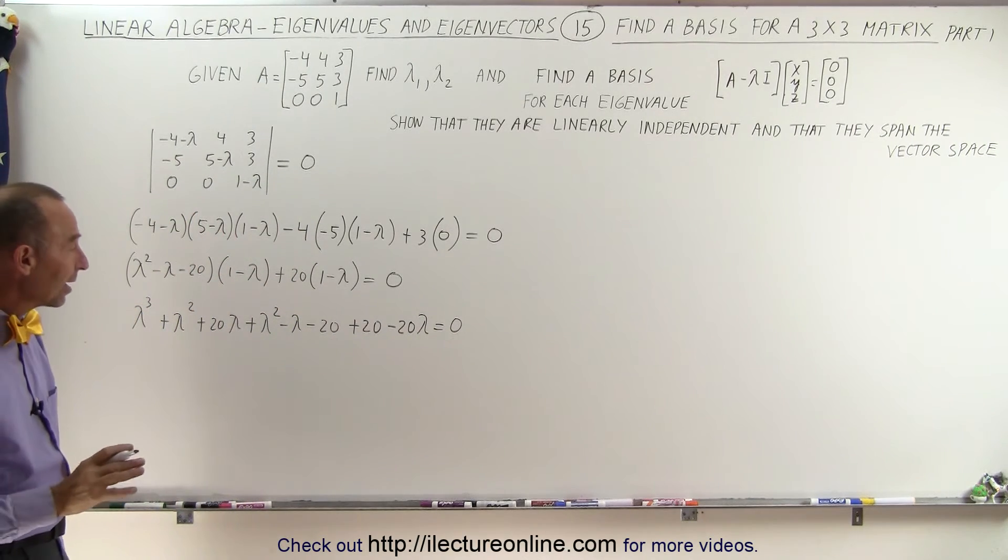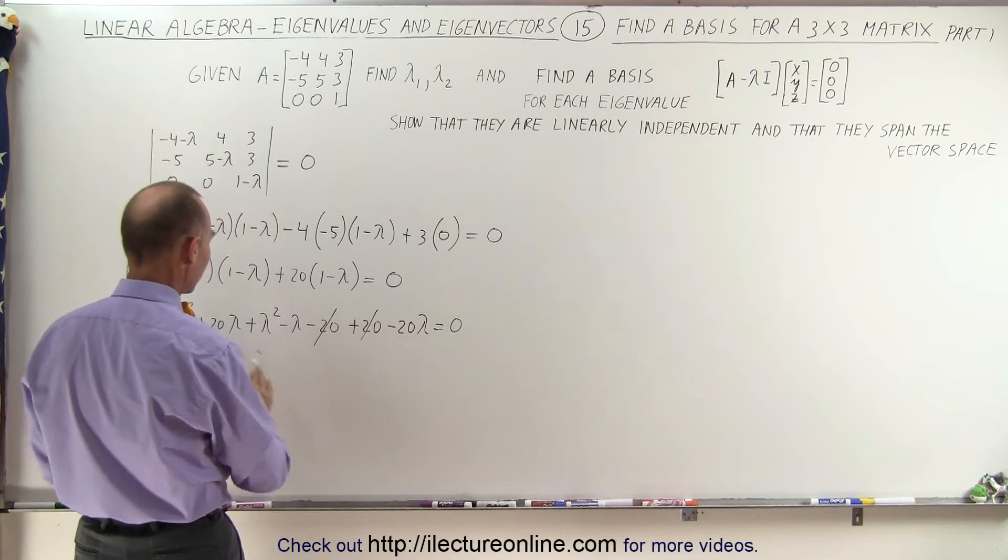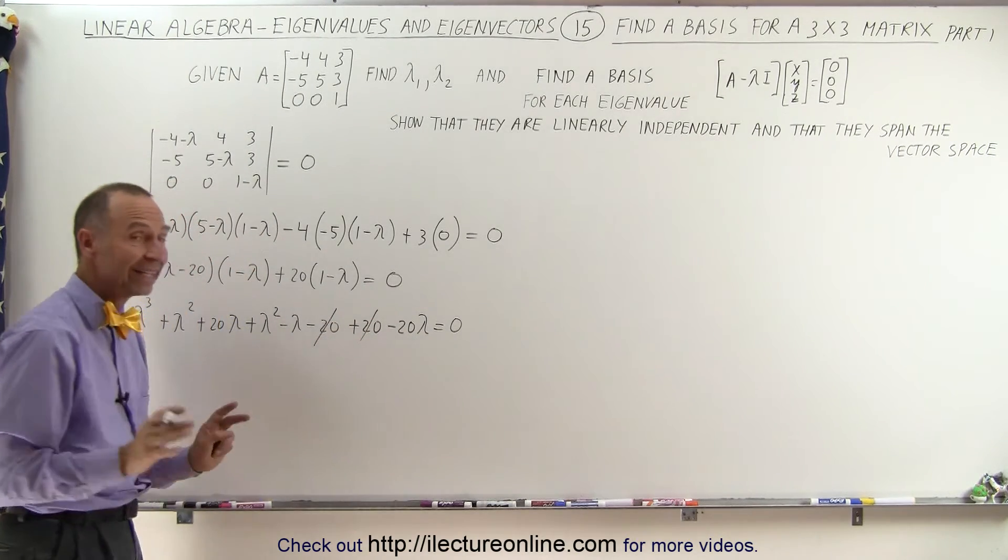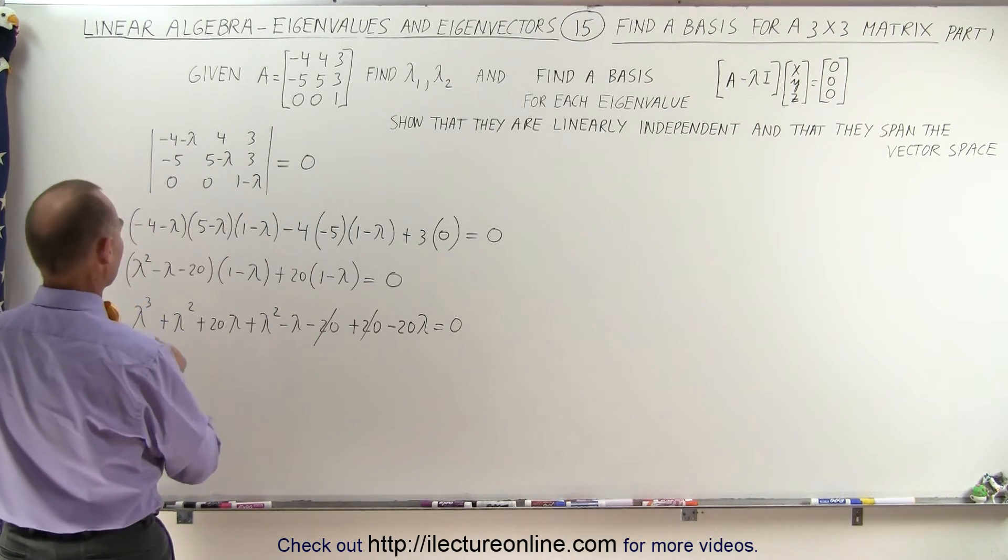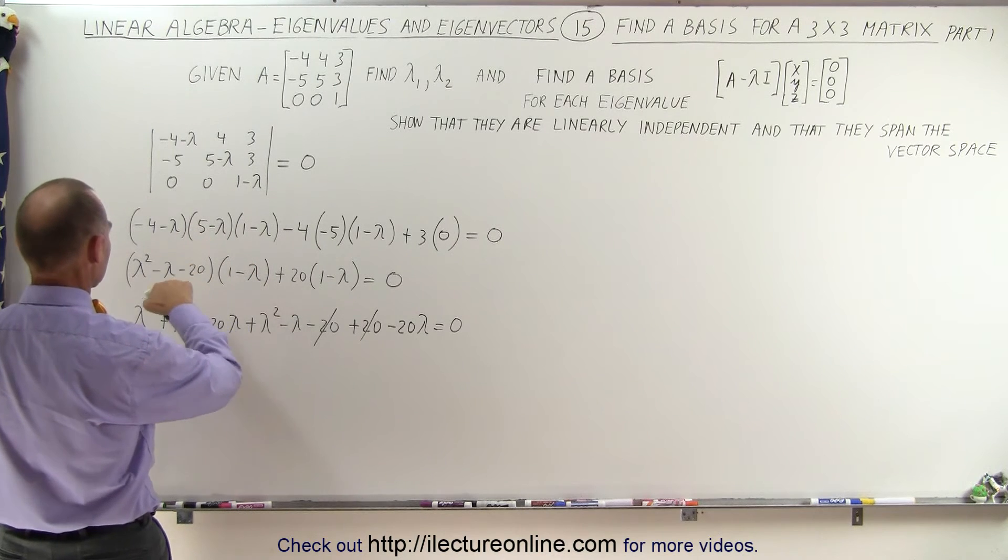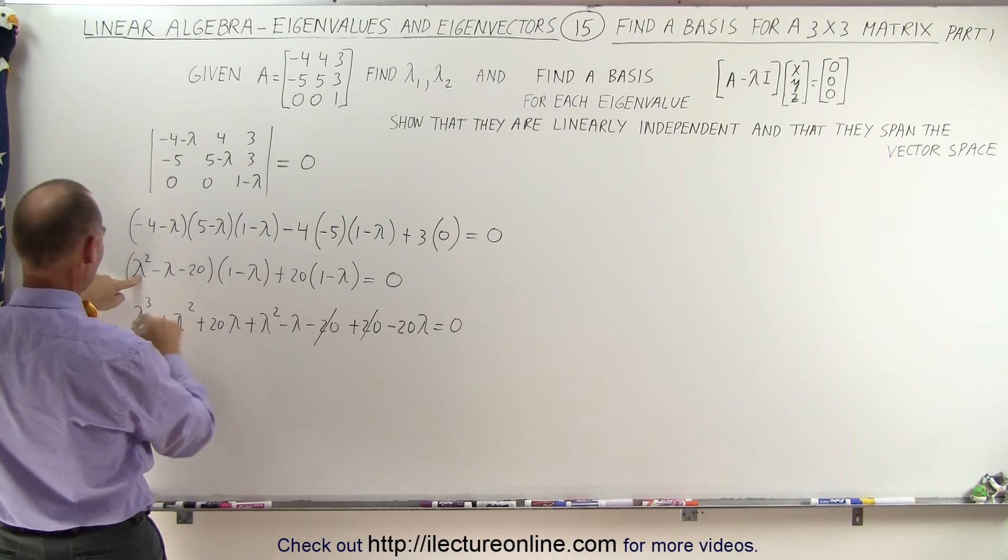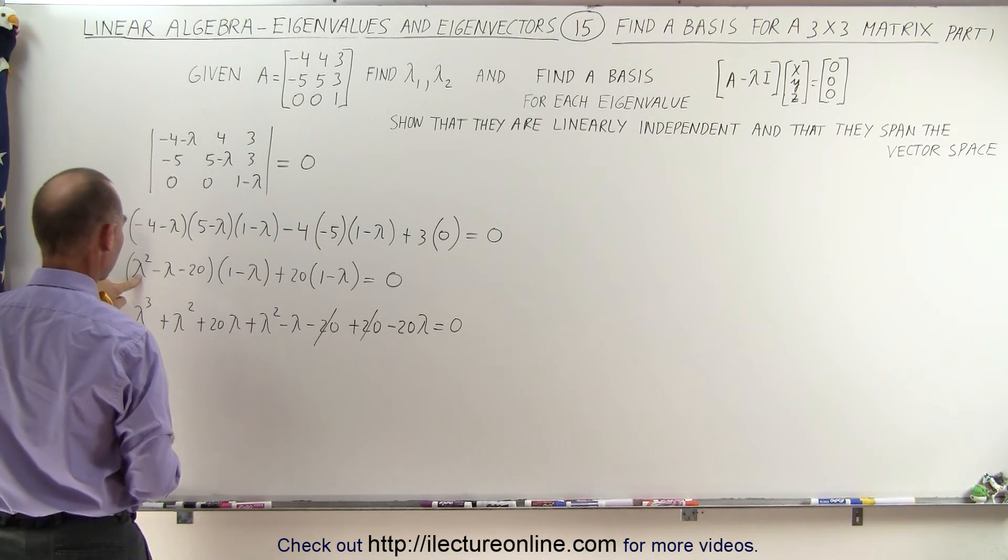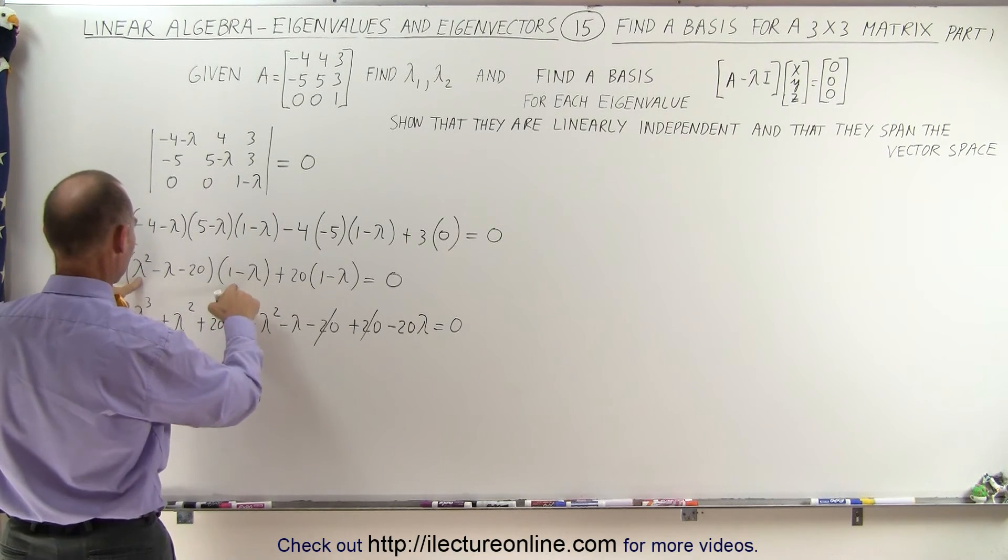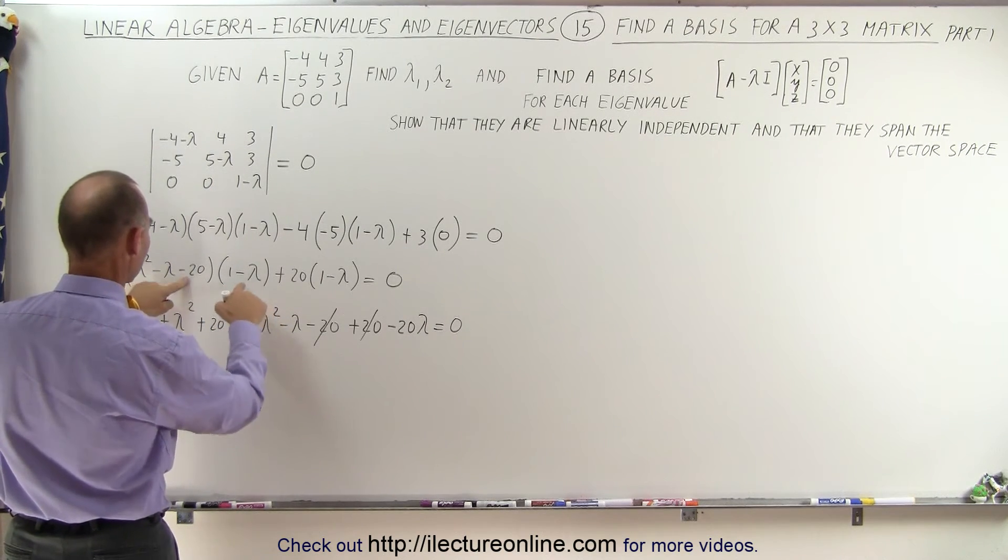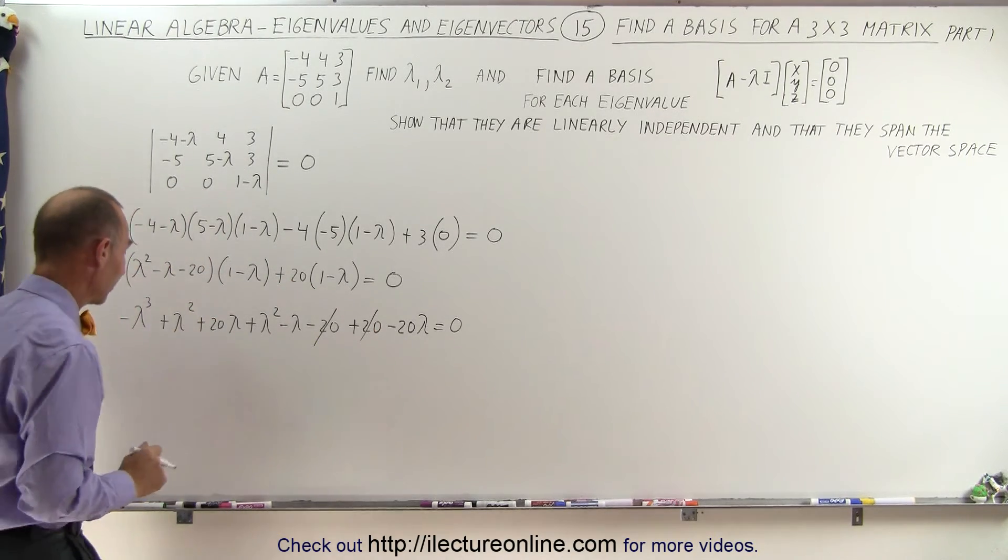The nice thing about it is that the constant term cancels out. Minus 20 plus 20 cancels out. No constant term means that it's a lot easier to solve a polynomial of order 3. Let's see here. I got to be careful because I think I'm missing a negative sign right here. This times this is actually minus lambda cubed. All right and this times this is plus, this times this is plus. So that would be plus minus minus minus, all right good. Got to be careful about those negative signs.